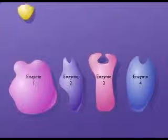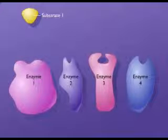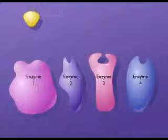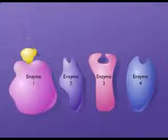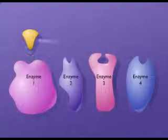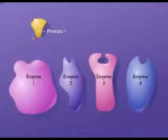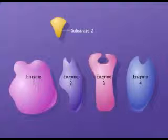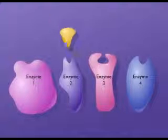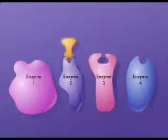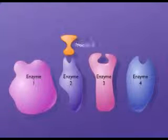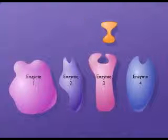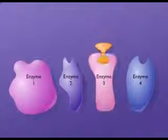In such pathways, a substrate is converted into a product by the first enzyme in the pathway, and the product of the first reaction then becomes the substrate for the next reaction. The product of the first reaction then becomes the substrate for the second enzyme. The sequence of reactions continues until the final product is made.